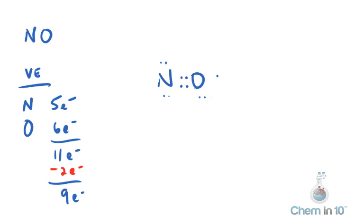Nitrogen has enough, oxygen has 2, 4, 6, 7. Okay, so that's one possibility. We're not going to get 2 full octets with an odd number of electrons.